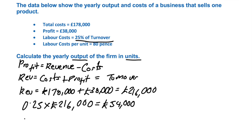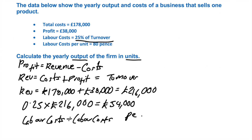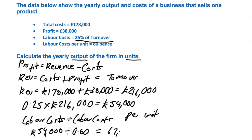The critical thing now is we're trying to calculate the yearly output of the firm. The way we can get those units is by taking the labour costs — which we've just calculated — and dividing that by the labour costs per unit, which we've been given. So that would be £54,000 divided by 80 pence. Don't be tricked by that because that's pence, not pounds. So we just need to convert that to £0.80. And if we do that, it's going to come to a number bigger than 54,000 because you've divided by a number less than 1. So it comes to 67,500.